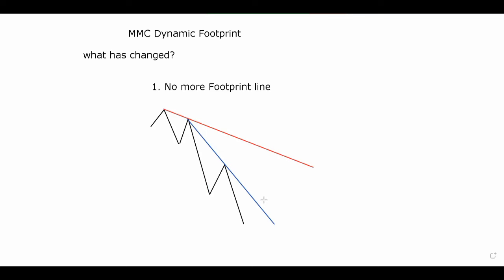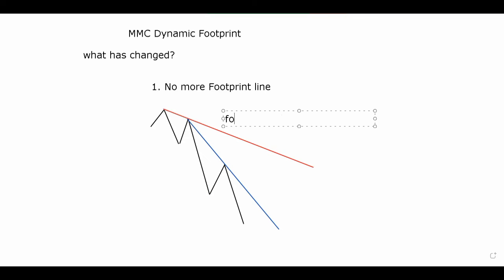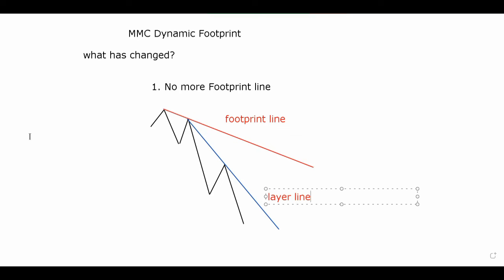D'Operandi does not look for a footprint line anymore. He only looks at the layer line and waits for it to break out and looks for divergence. I've tested it and in the group chat we've been killing it. Since I found out, I'm getting more signals now because the market does not always make M patterns and W patterns, making the footprint irrelevant. The market changes every day. The blue line is the layer line - that's the only line we're going to use. We're no longer focusing on the footprint line.